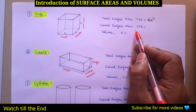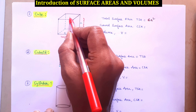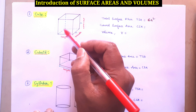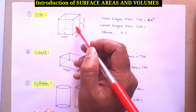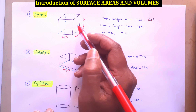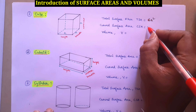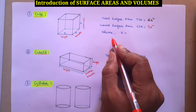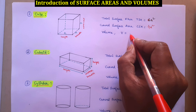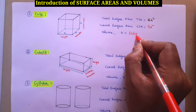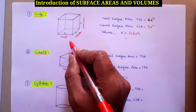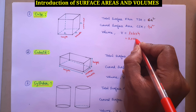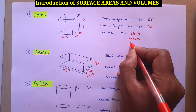Curved surface area means except the top and bottom, the remaining four sides — front, back, left, right. For a cube, curved surface area is 4A².